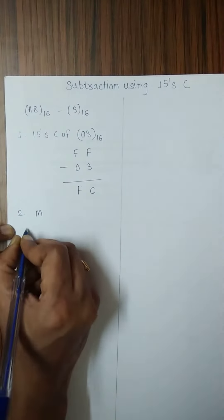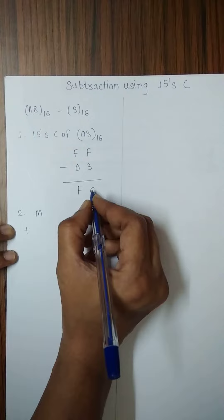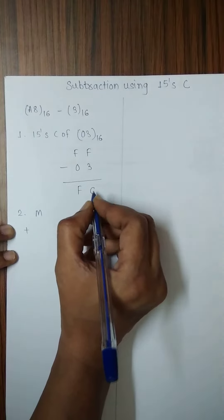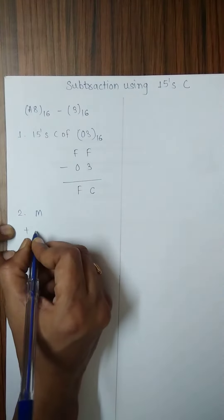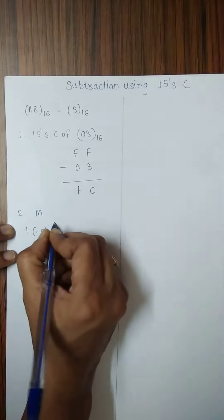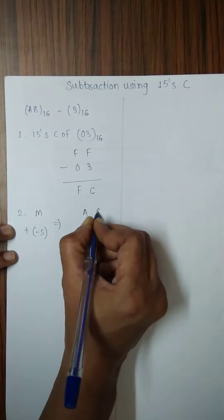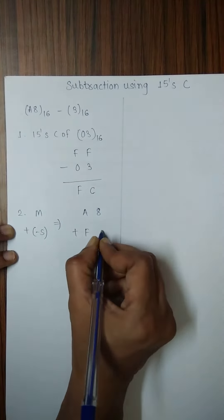Then we must add this 15's complement which is representing the negative 03 to the minuend. Minuend is A8. We have to perform this addition in hexadecimal.